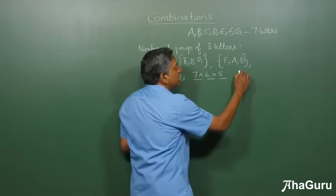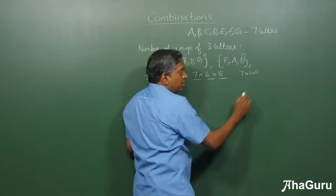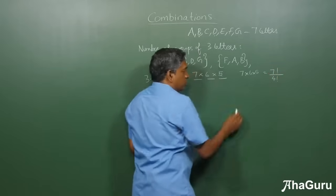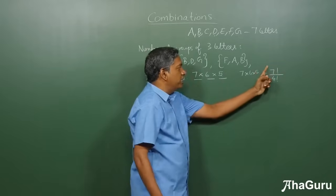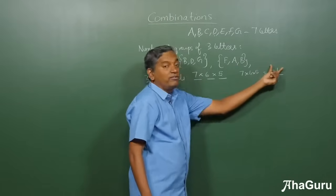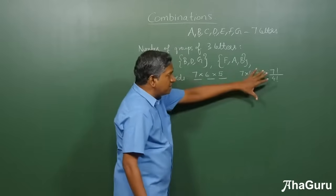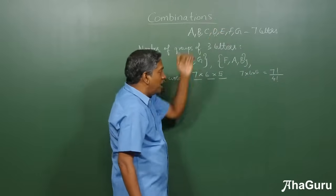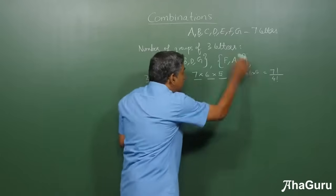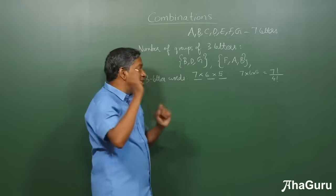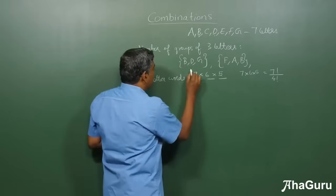So this will be 7 into 6 into 5, which is also 7 factorial by 4 factorial. Because if you do 7, 6, 5, 4, 3, 2, 1, and you divide by 4, 3, 2, 1, you'll get 7 factorial by 4 factorial. And this is something that we have already learned when we did permutations or arrangements. But this is not what is asked. We want groups of 3 letters,